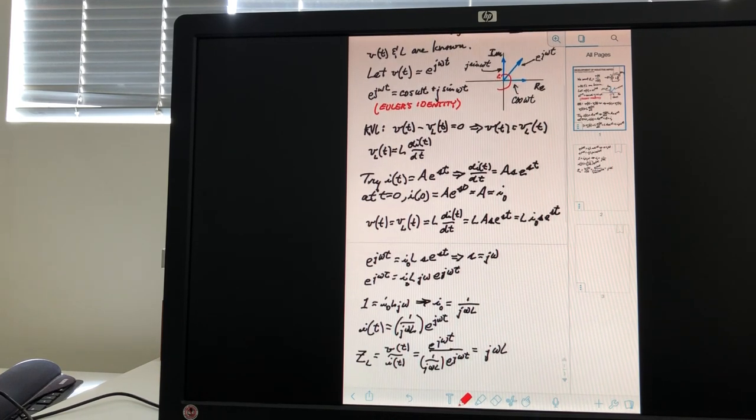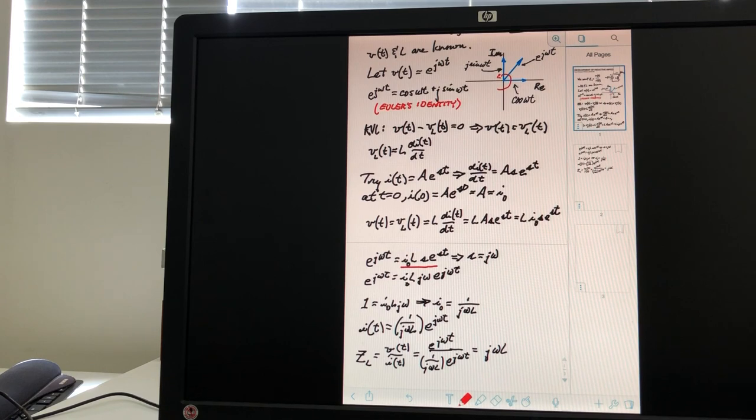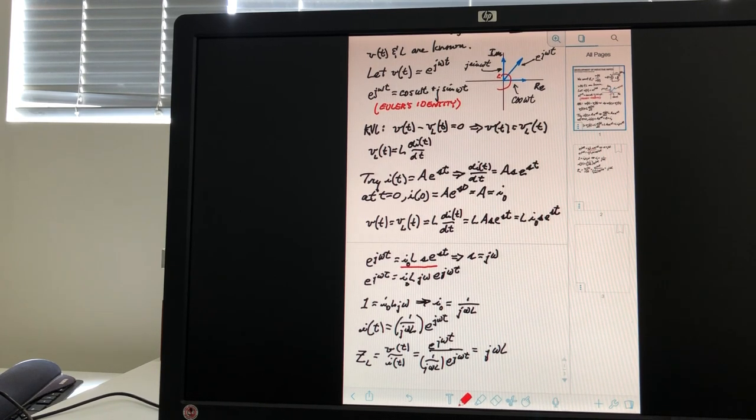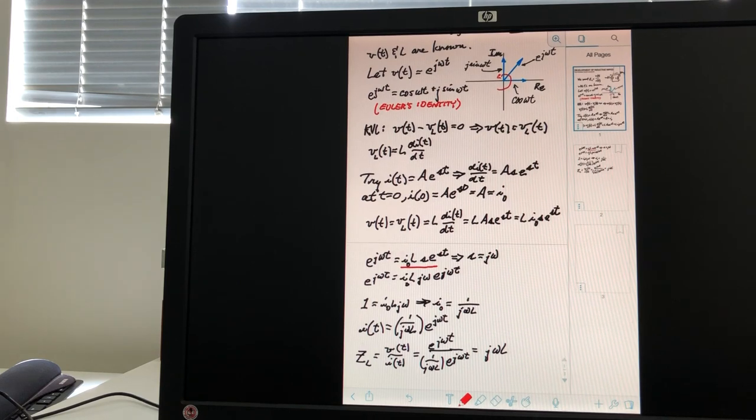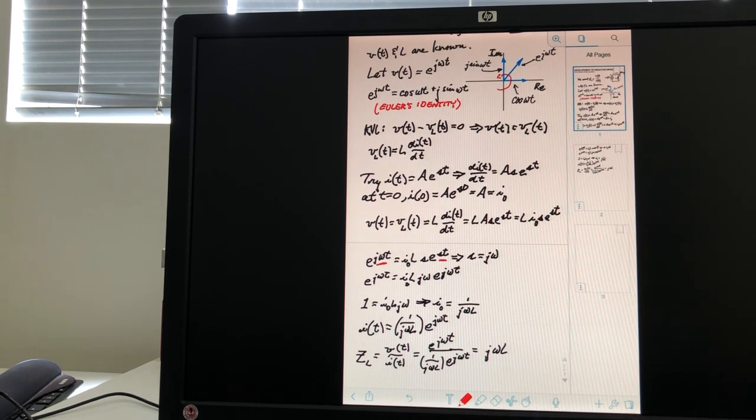So, but we also know that V of T can be expressed as e to the j omega t. So, we plug that in. And then we bring over the right-hand side, basically unchanged with the rearrangement of terms a little bit. But the thing to notice here is that we have the left side increasing as e to the j omega t. And the right side then must also increase as e to the j omega t. And that means that S has to equal j omega. So, that's this part right here.